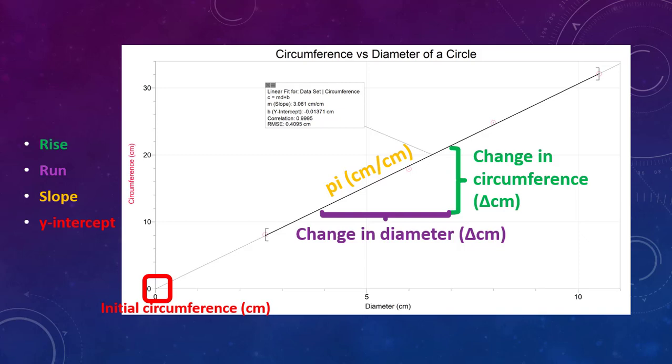What is our x variable? In this case, it's the diameter of a circle. So the y-intercept is telling us what the circumference of a circle would be if the diameter was zero centimeters. And that makes sense.